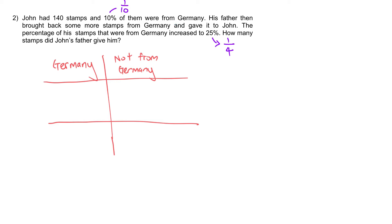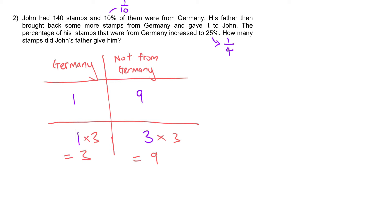Hence, 1 unit is from Germany while the remaining 9 units are not from Germany. After receiving more stamps, the ratio becomes 1 is to 3. Why 3? Because 1 out of the total 4 units are from Germany, so the remaining 3 out of 4 must be not from Germany. If you think about it, the number of stamps from Germany changes. However, the number of stamps not from Germany stays the same. Hence, the 9 units and the 3 units must represent the same value. We multiply by 3 to give us 9, making them equal.